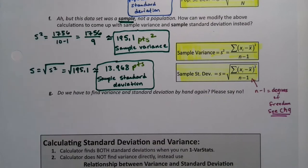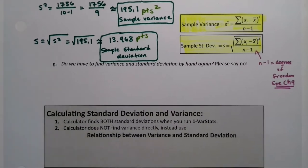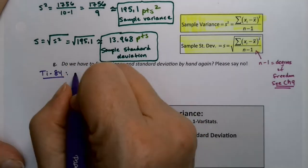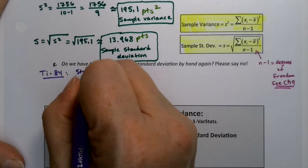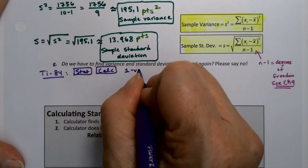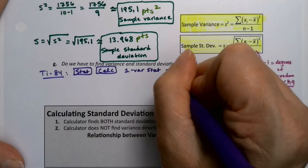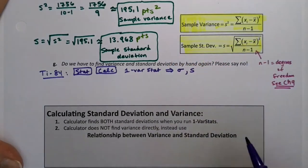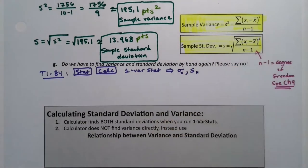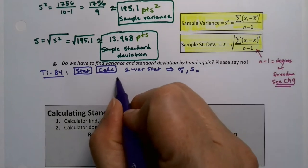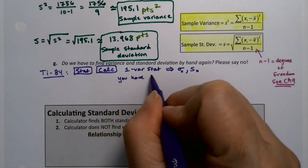So we need to write some things down for ourselves. We will never do this again by hand, right? So on the calculator, you do stat, calc, and then one variable stat. It will find S and will find sigma. It'll say SX and sigmaX, but what's important is that it's S and sigma. It will not find variance. You have to find variance yourself. We'll talk about that down here.